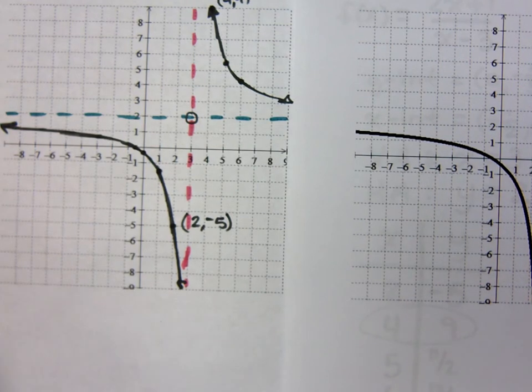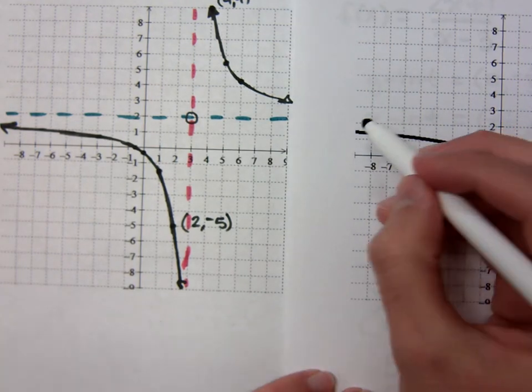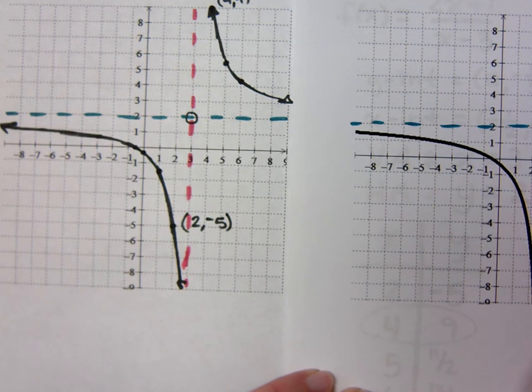With your vertical asymptote and your horizontal asymptote, what do you guys think about that? Good enough for government work? All right.